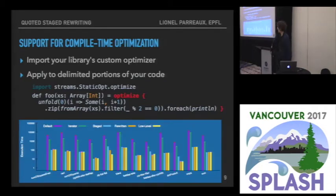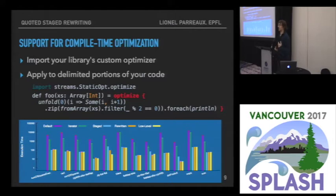The result is that by just enclosing pieces of code that use the streams library we defined in the paper, we get the same performance as low-level loops — similar performance as staging, although we actually achieve a little more fusion than previous approaches.